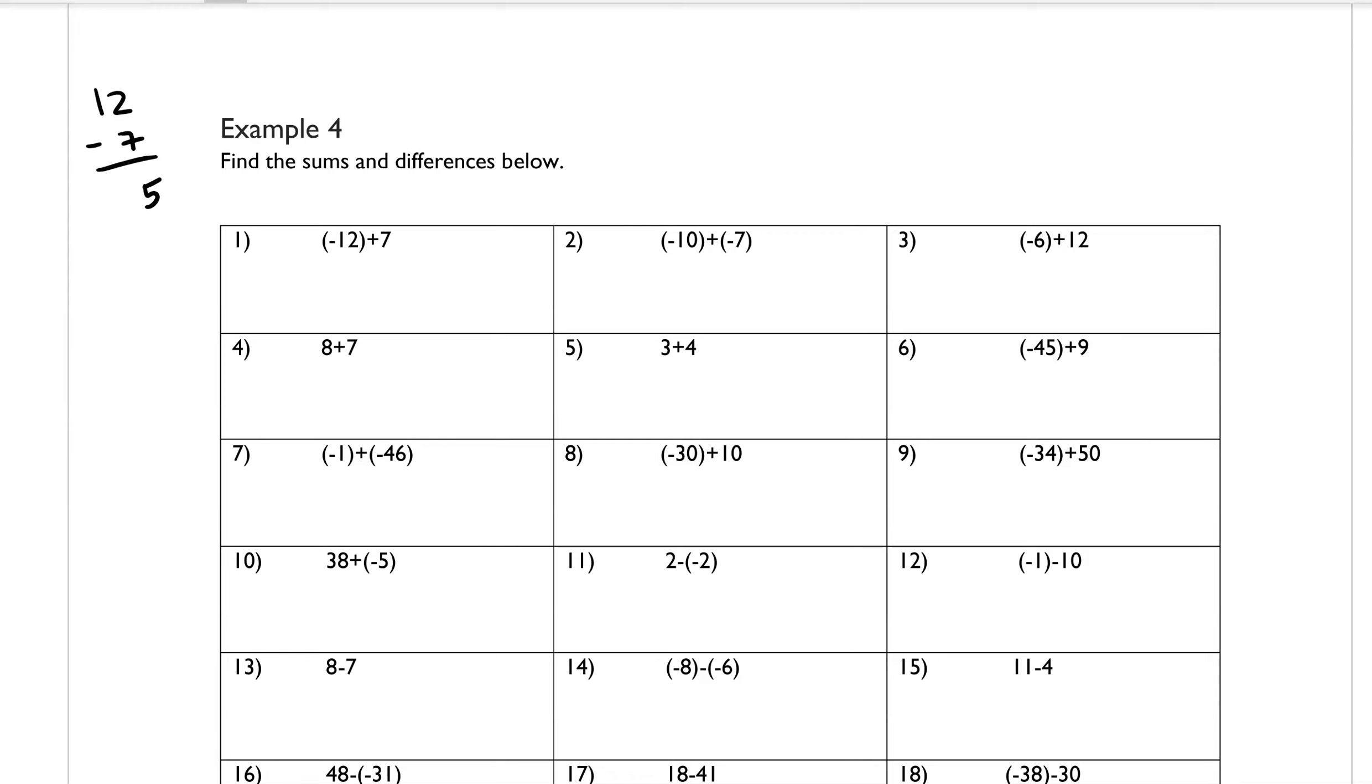Which is 5. And then we want to put either a positive or negative, depending on which one has the larger absolute value. And so because the negative here, it's more negative, our 5 is going to have a negative on it. Because out of 12 and 7, 12 is the larger number.